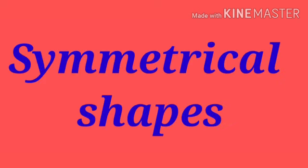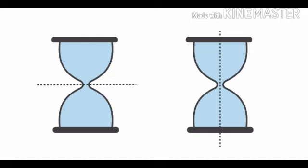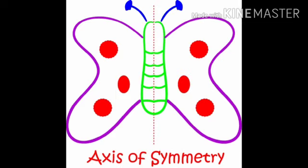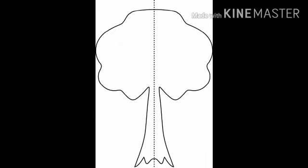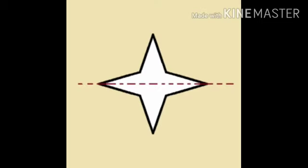Now let's see some examples of symmetrical shapes. Here we can see horizontal as well as vertical lines of symmetry. This symmetrical figure has a vertical line of symmetry. Even this figure has a vertical line of symmetry. Here we can see a horizontal line of symmetry, a vertical line of symmetry, and the last picture again has a horizontal line of symmetry.